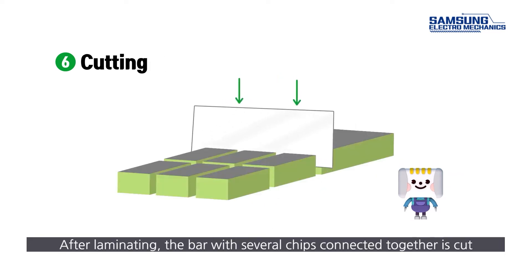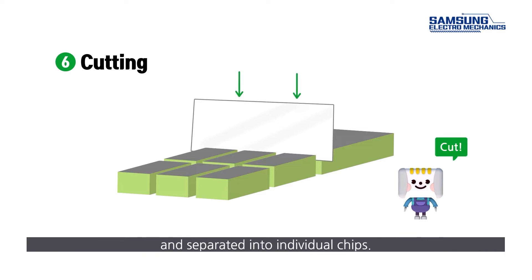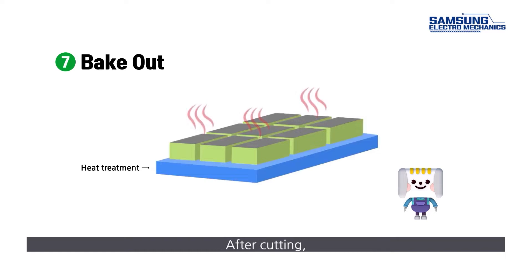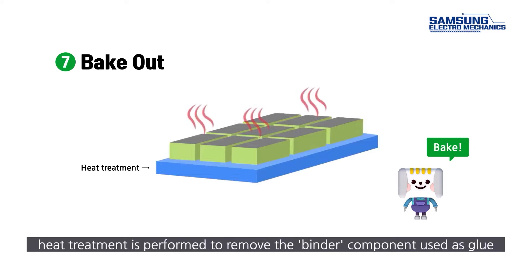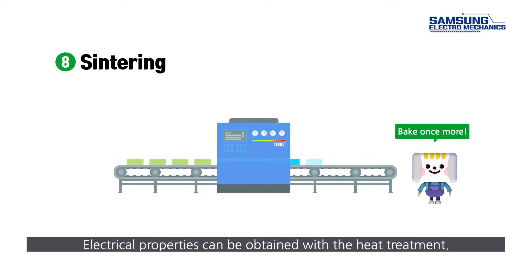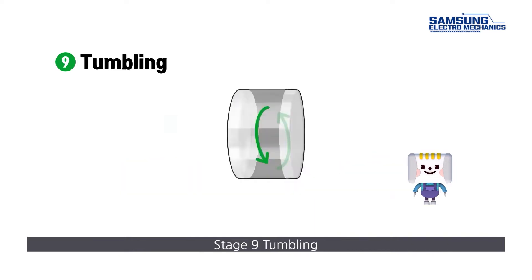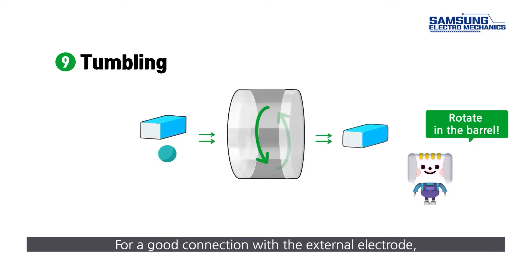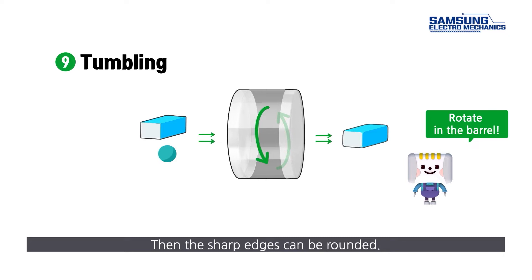Stage six: cutting. After laminating, the bar with several chips connected together is cut and separated into individual chips. Stage seven: bake out. After cutting, heat treatment is performed to remove the binder component used as glue when making the slurry in the first stage. Stage eight: sintering. To make the dielectric powder in the chip into a single mass, chips are heat treated at high temperatures. Electrical properties can be obtained with the heat treatment. Stage nine: tumbling. For a good connection with the external electrode, the ceramic chips are placed in rotating barrels so that the sharp edges can be rounded.